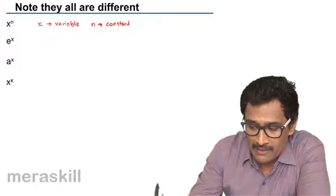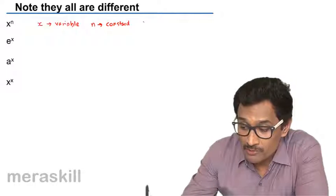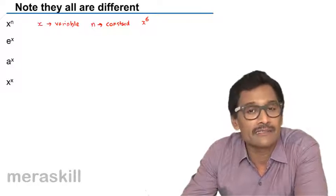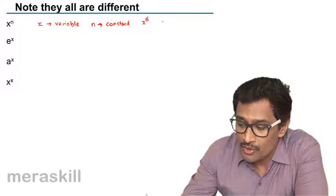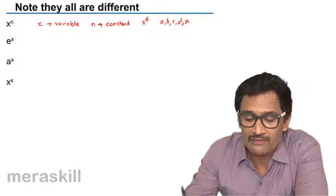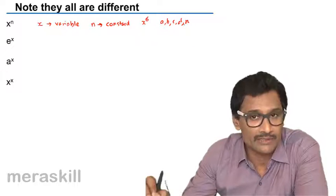So numbers like n - it could be something like x raised to 6. So here x is a variable, 6 is a constant. So terms like a, b, c, d, n, etc., with respect to derivative will be taken as constants.